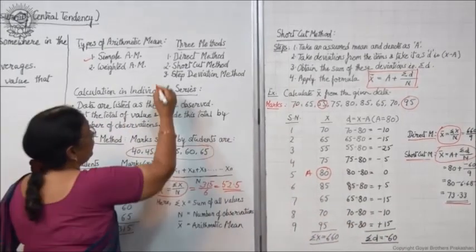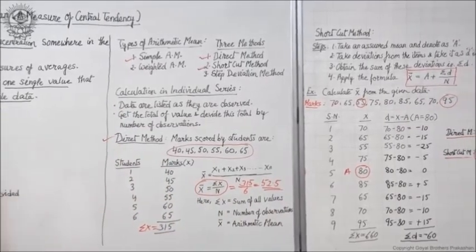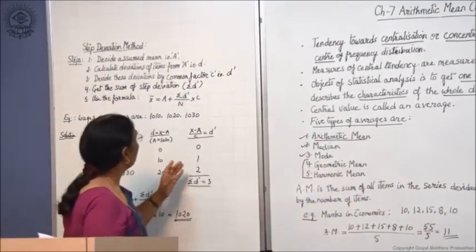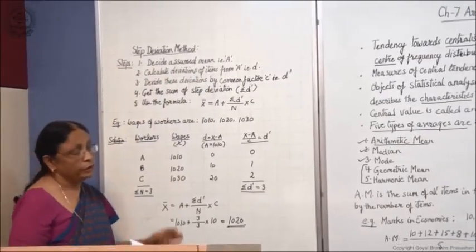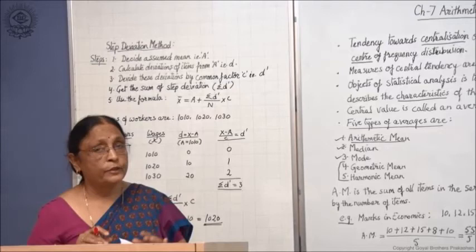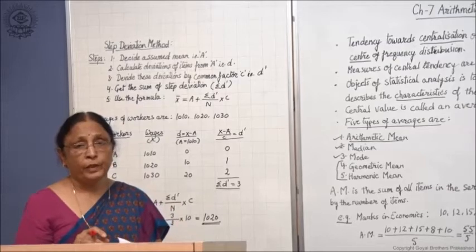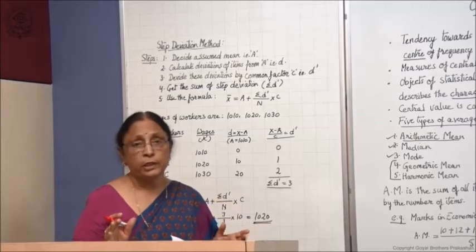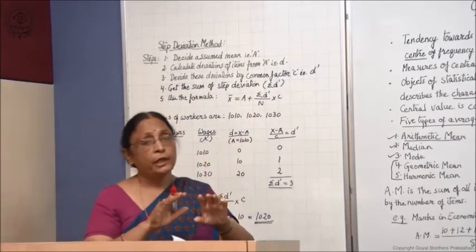The two methods covered so far are the direct method and the shortcut method. Now let us move to the third method, which is the step deviation method. This method is an expanded form of the other two methods. The method of calculation is more or less the same, but when figures are very large and the data is quite vast, the step deviation method is used.